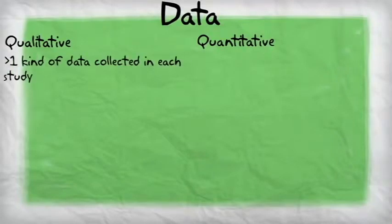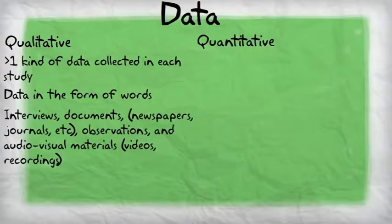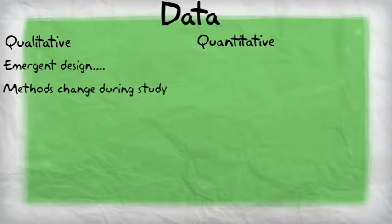Typically in qualitative research, researchers collect more than one type of data in order to get a better, more holistic picture of what's going on in the field. The data used in qualitative research is in the form of words, like interviews and documents. The data for quantitative research is in the form of numbers.